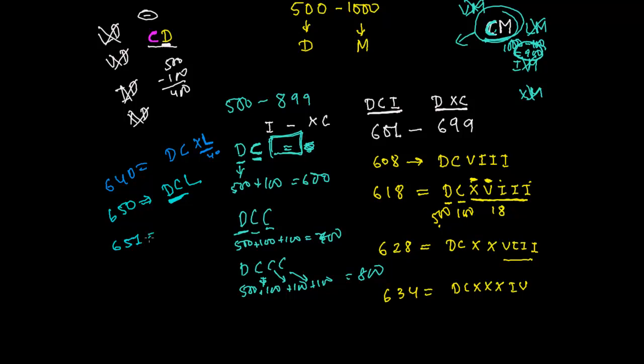Now let's write 650. That's very simple. 600 and 50. DCL is 650. If I'm writing 651, then I will write 650 and then I. And if I'm writing 677, first I write 600, then 50, that's 650, then 20 for 670, and 7 which is VII. DCLXXVII is 677. Now let's write 688. I will write 600, then 80, then 8. DCLXXXVIII is 688.